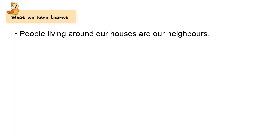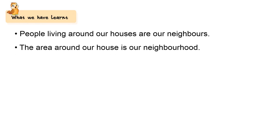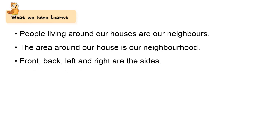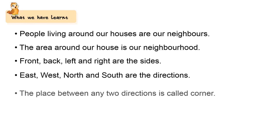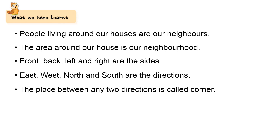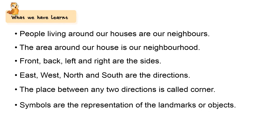What have we learned? People living around our houses are our neighbors. The area around our house is our neighborhood. Front, back, left and right are the sides. East, West, North and South are the directions. The place between any two directions is called a corner. Symbols are the representation of landmarks or objects. A landmark is a well-known place in a locality.